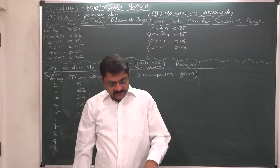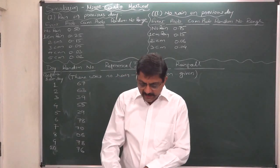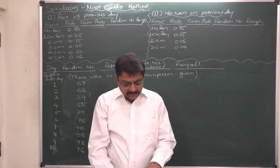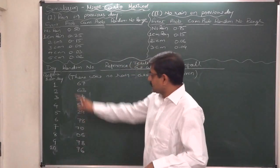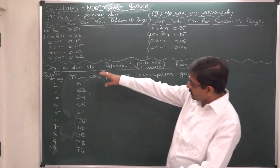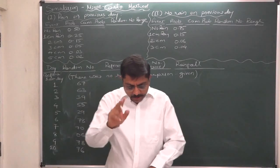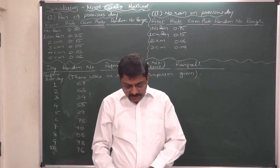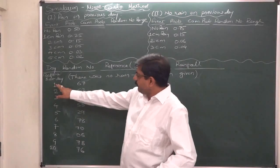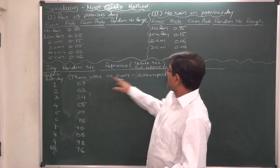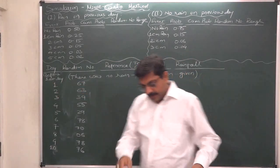Simulate the city's weather for the next 10 days and determine by simulation: the total days without rain and the total rainfall during the 10-day period. Use the 10 random numbers given in the problem. Assume that for the first day of simulation, there was no rain on the day before.